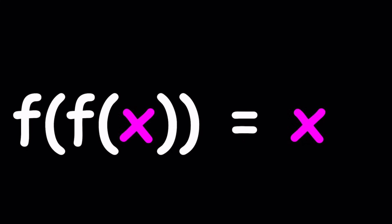Hello everyone. In this video, we're going to be solving a very interesting functional equation. We have a function f that satisfies f of f of x equals x. In other words, if you compose f with itself, you get the identity function. Are there functions that satisfy this equation? We're going to explore that, and I'm also going to show you a really cool way to come up with more solutions and more interesting functions.